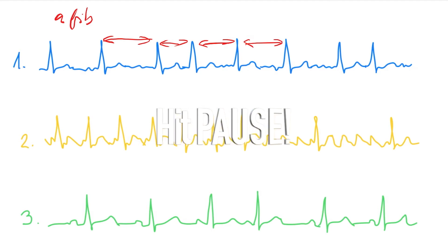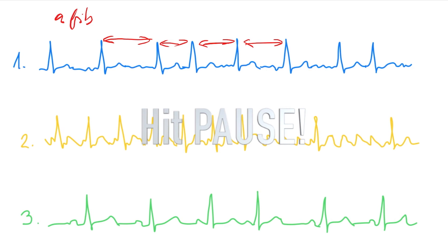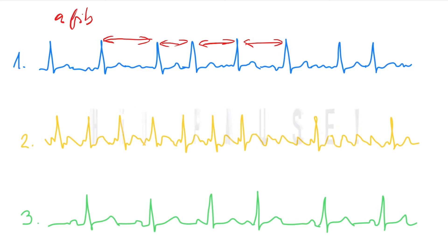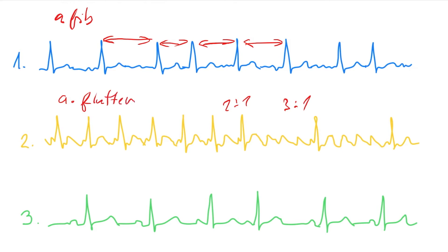What is number two? What do you think, guys? It changes over here — now it's 1 to 1, and over here it's 3 to 1. What is that? How does the AV block? It's flutter. It's flutter. AFlutter. Okay. And it changed over here. Good.